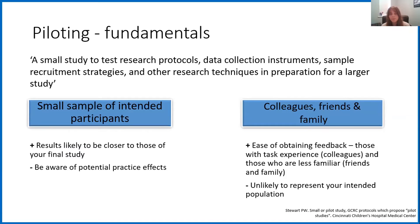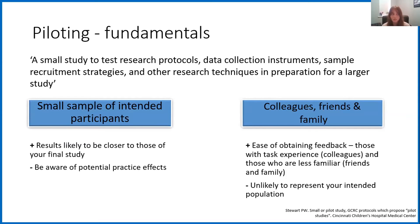The other way that you can pilot is with your colleagues, friends and family. This is a great way to easily obtain feedback because you can just ask them to do your study and tell you any issues and what they thought of it. It also allows you to test a bit of a range of people — those with task experience who know your field and cognitive testing, as well as those less familiar with science in general, perhaps your friends and family. These people are probably more similar to the general population. However, they are unlikely to represent your intended population, unless your intended population is the general public.